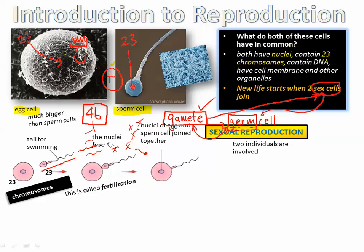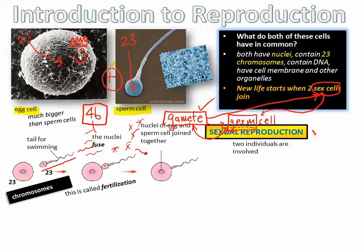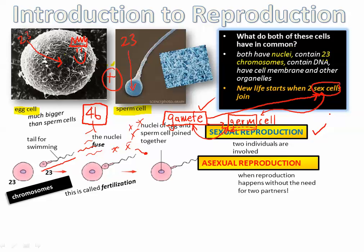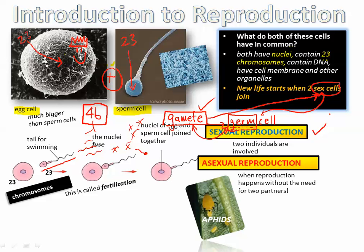Sexual reproduction is when two individuals are involved — and I know you learned this before in elementary school. Sexual reproduction involves two individuals: male and female. Asexual reproduction is when one individual reproduces on its own. Humans can't do this. It's basically when reproduction happens without the need for two partners.